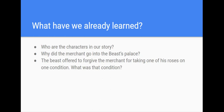Now let's review really quick everything we have learned so far from our first part of the Beauty and the Beast read aloud. Who are the characters in our story? In the last story, why did the merchant go into the beast's palace? The beast at the end offered to forgive the merchant for taking one of his roses on one condition. What was that condition?